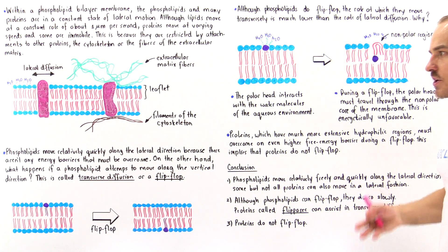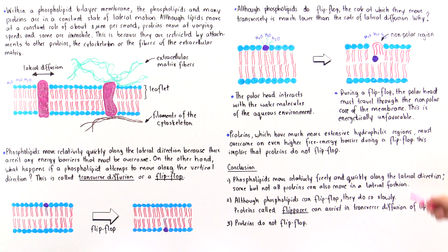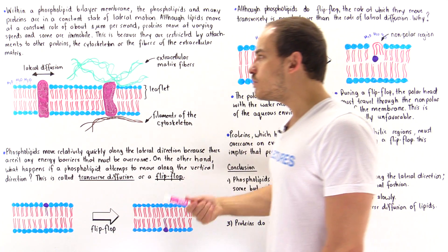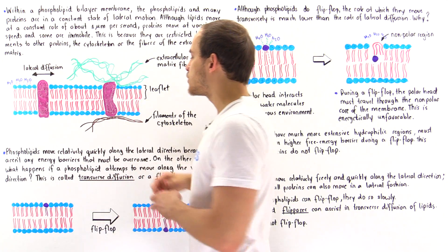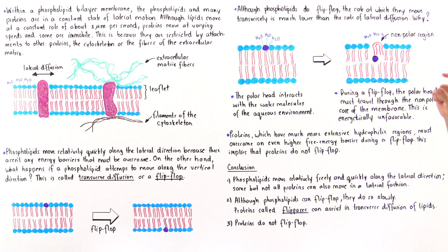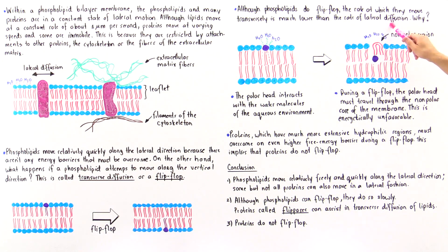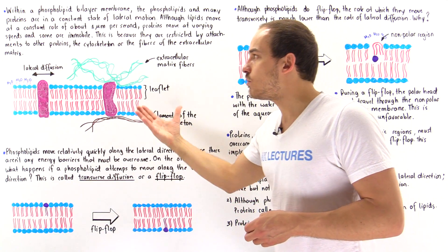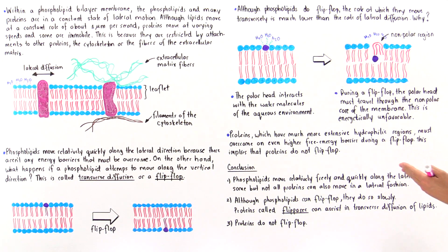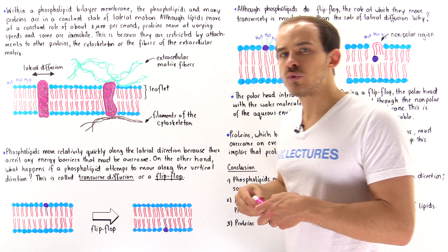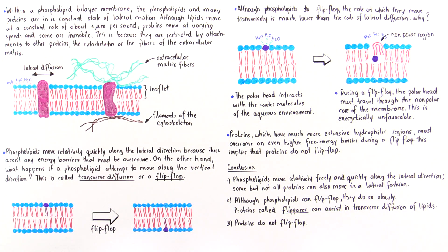We can conclude three important points. Point one: phospholipids move relatively freely and quickly along the lateral direction. Although proteins can also move relatively quickly laterally, some proteins are actually immobilized because of attachments to other structures. Point two: although phospholipids can move transversely — they can flip-flop — the rate at which they flip-flop is much lower than lateral diffusion. Proteins cannot flip-flop at all because of the high energy barrier; the extensive polar region of the protein cannot interact favorably with the hydrophobic core of the lipid bilayer.